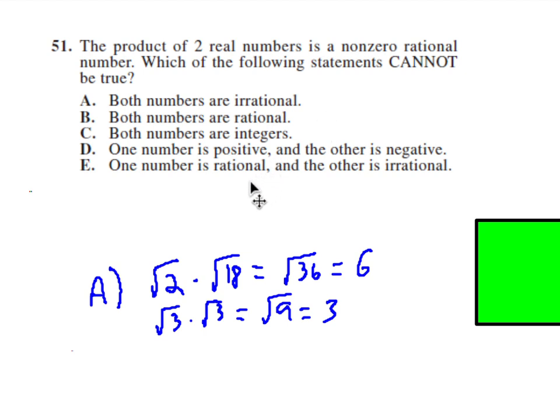But then E, one number is rational and the other is irrational. I can't really tell you the reason for this because I don't know it, but you just want to know that when you multiply a rational times an irrational, you will get an irrational number. Now, the only exception is if that rational number is 0. So if you do 0 times the irrational number, you will get 0, which is rational, but 0 is not non-zero. So this still can't be true. So the answer is E.